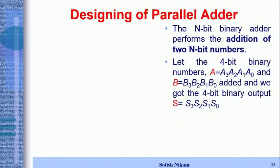For our discussion, we consider a four-bit parallel adder, meaning we have to add two numbers A and B. A is a four-bit number: a3, a2, a1, and a0. B is also four bits: b3, b2, b1, and b0. When we add A and B, we get the result S in the form of s3, s2, s1, and s0.